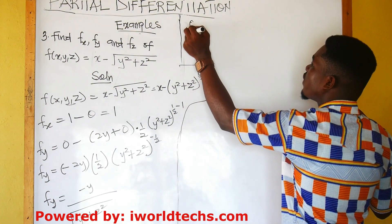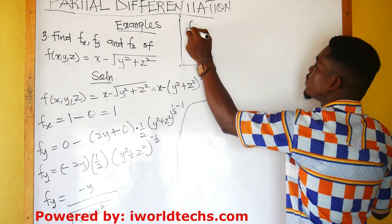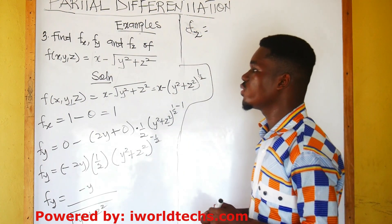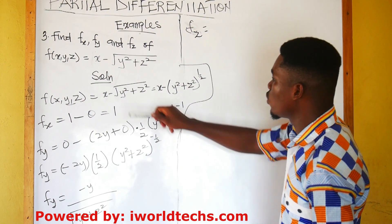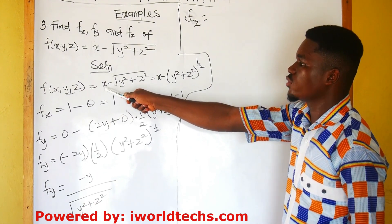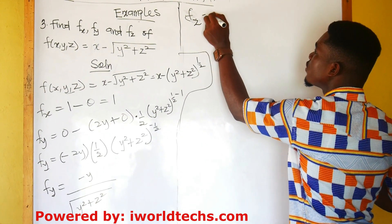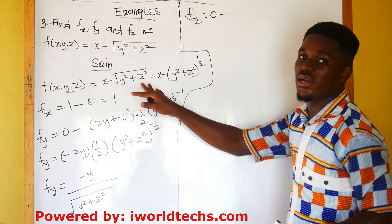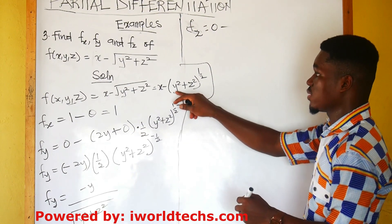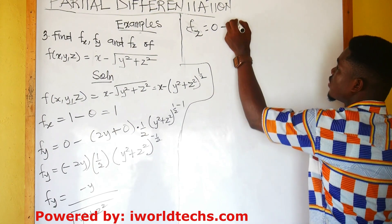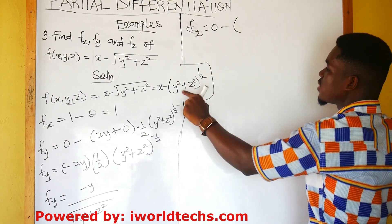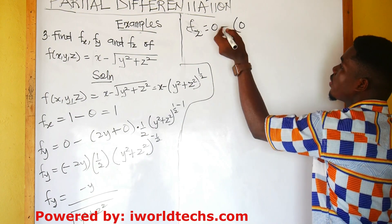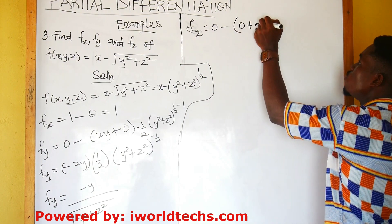Therefore, the partial derivative of this function with respect to z: we hold x and y constant. So the partial derivative of x with respect to z is 0 minus... Let's differentiate what is in the bracket first. Since y is held constant, the partial derivative gives 0 plus 2z.